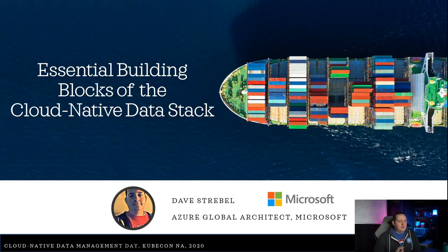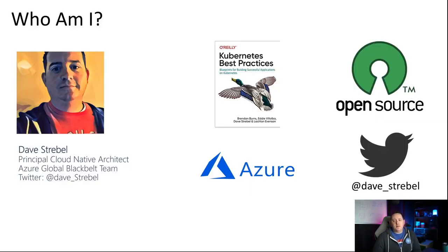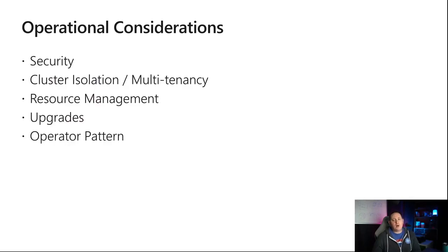Hi, and welcome to Cloud Native Data Stack Day. I'll be covering Kubernetes operational considerations. My name is Dave Strable — Cloud Native Global Architect at Microsoft on the Azure Global Black Belt team, recently co-authored a book called Kubernetes Best Practices. You can connect with me on Twitter at Dave underscore Strable. When we start talking about operational considerations, there are a lot of different aspects to consider. I'm going to cover security, cluster design for isolation, multi-tenancy, resource management, Kubernetes upgrades, and the operator pattern.